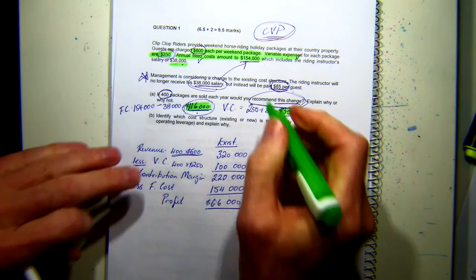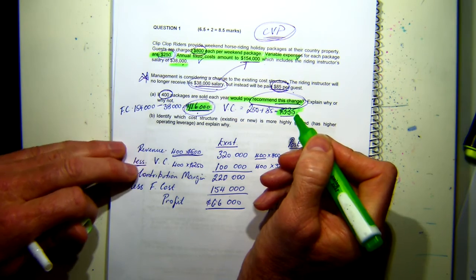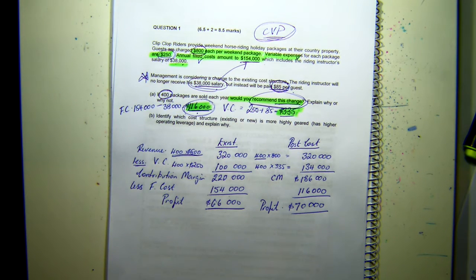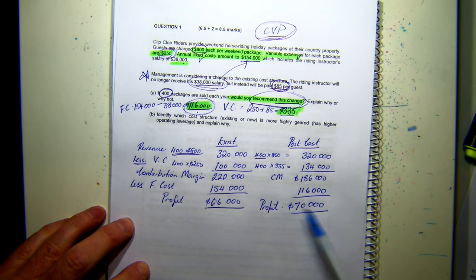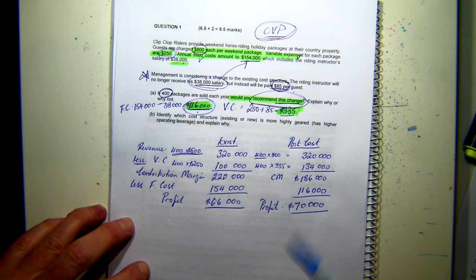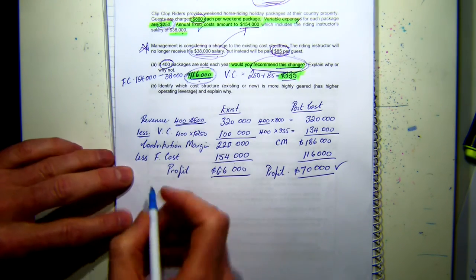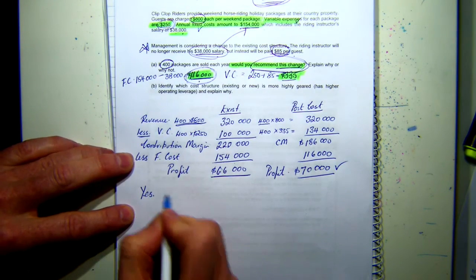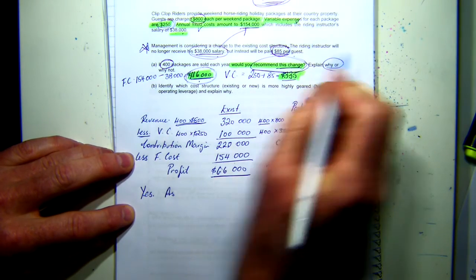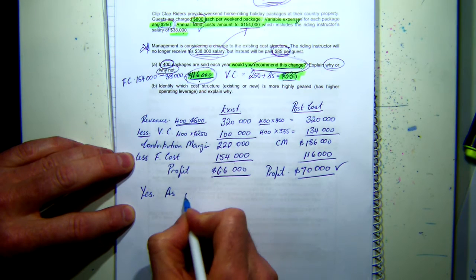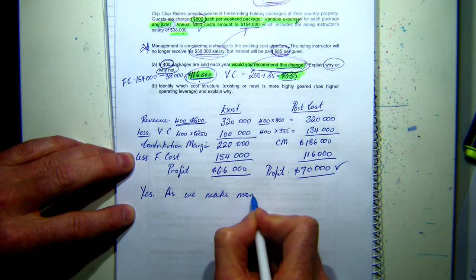The question I've been asked is: would you recommend this change? Given the situation, would you like to make a profit of $66,000 or $70,000? Smart business people - I'd like to make the higher one. Would you recommend this change? Yes, because as the question asks you to explain why or why not - we make more profit.